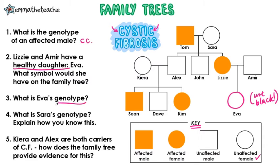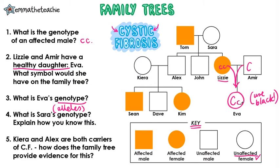What is Eva's genotype? Genotype just means what alleles she has. We already know that she's unaffected, which means she has a normal dominant allele which she got from her dad. But her other allele will have come from her mother who has got cystic fibrosis, and therefore she can only pass on a little c to Eva. So Eva's genotype is big C, little c.